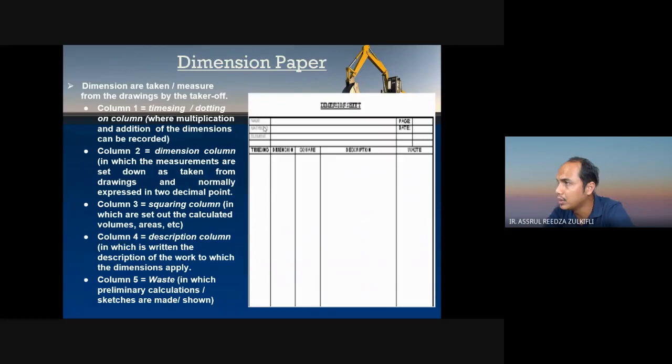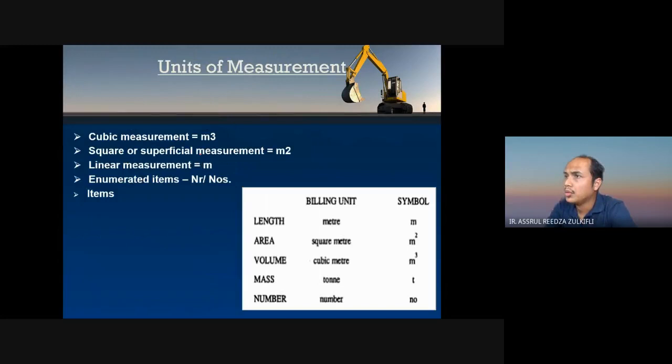This is the dimension paper, which we have looked at previously. It has the timesing column, the dimension column, and then the answer column. This is the description of work. The unit of measurement for cubic measurement is meter cube. Square or superficial measurement is in meter square. And the volume measurement is also in meter cube.